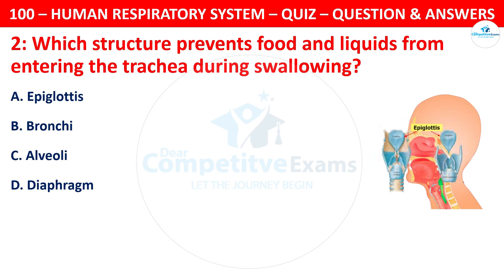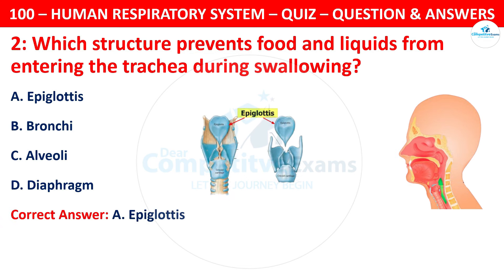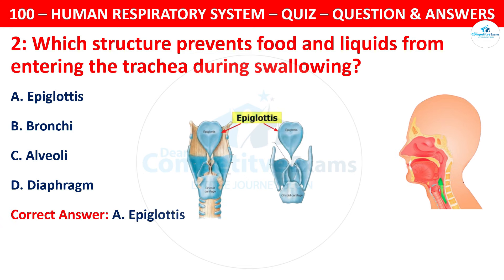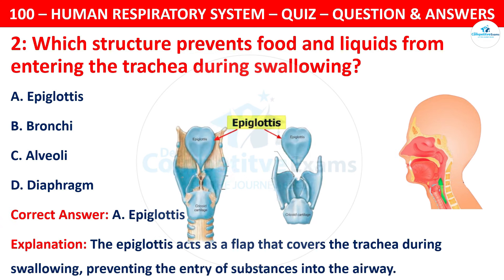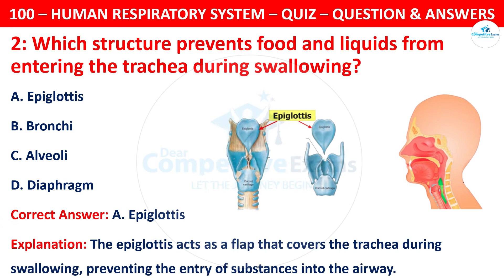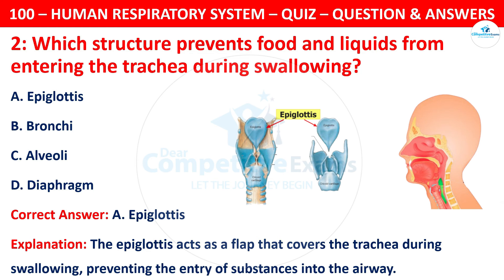The correct answer is A, epiglottis. The epiglottis acts as a flap that covers the trachea during swallowing, preventing the entry of substances into the airway.